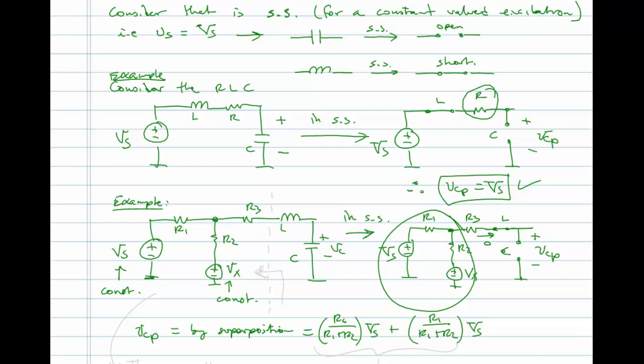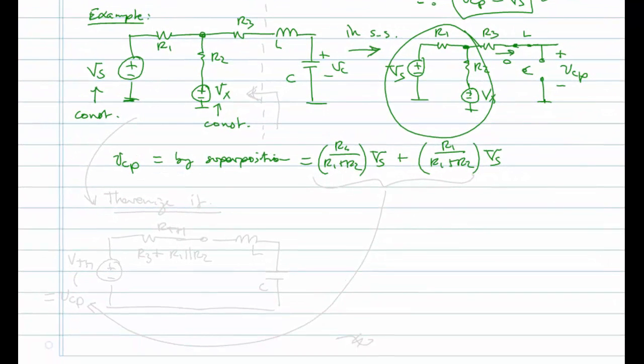Now if I wanted to solve for the response of this circuit, what I would have to do, or what I'd want to do, is to actually Thevenize it. Because after all, if I can reduce this to a single R, L, C and a single source, why would I stick with this more complicated circuit? So let's Thevenize it.